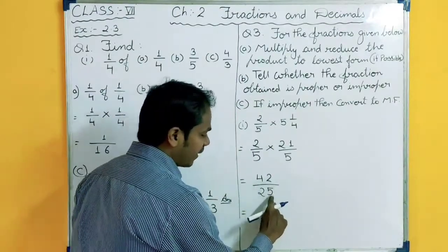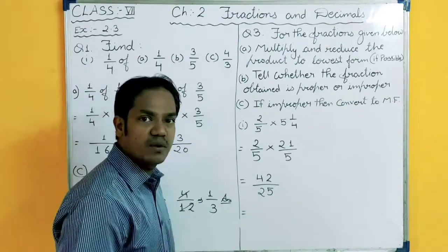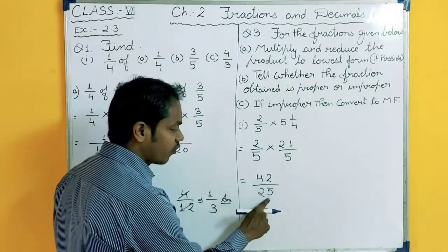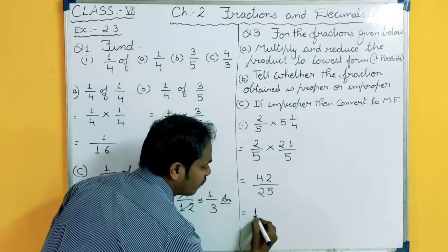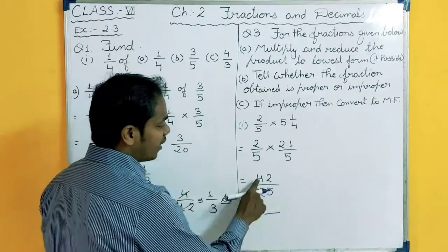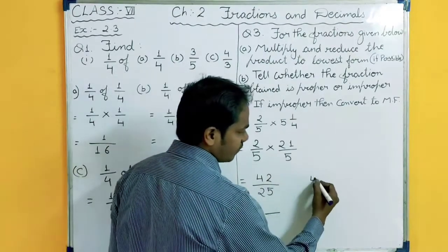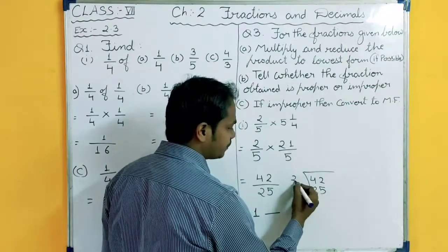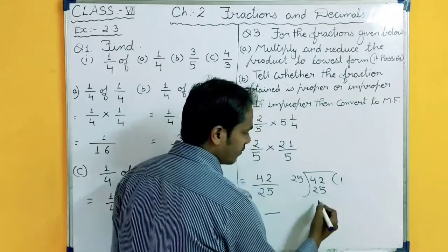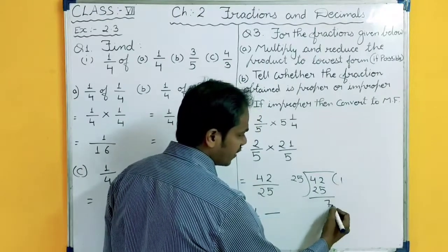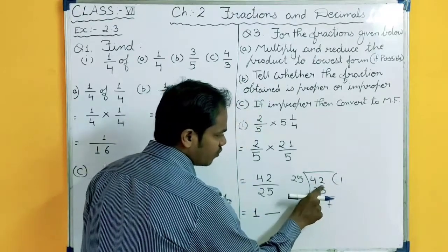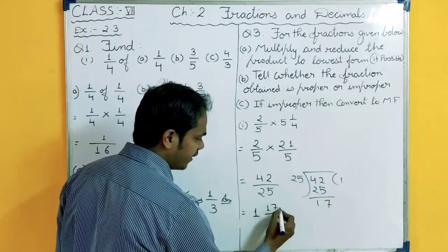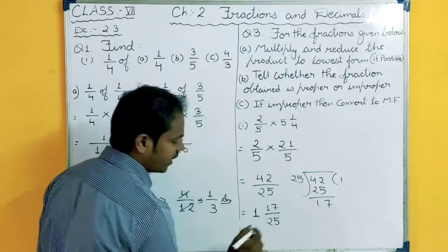So here we convert it into a mixed fraction. 42 divided by 25: 25 ones are 25, and 42 minus 25 — you borrow 1, 12 minus 5 is 7, and 3 minus 2 is 1, so the remainder is 17. Therefore 42 divided by 25 gives 1 remainder 17, written as 1 and 17 upon 25.